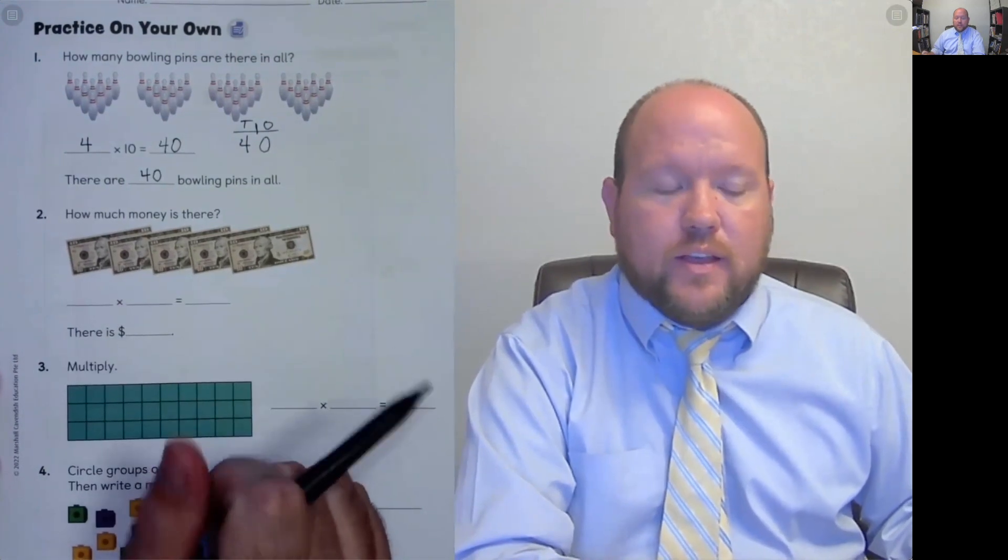Number 2, how much money is there? So we have $10 bills and we have 1, 2, 3, 4, 5. Now here, it doesn't give you any of the numbers. So what number needs to go first? It wouldn't change your answer, but it does change the way we think about it. Are there 10 groups of 5 or are there 5 groups of 10? There are 5 groups of 10. We put 5 times 10. 5 times 10 is 50. The 5 was in the ones place, but we shift it over to the tens place and then we add the zero. So there it is, $50.